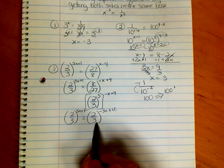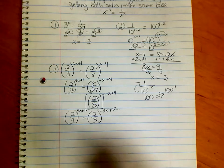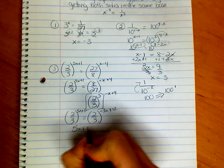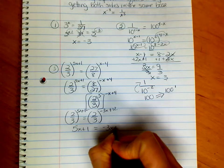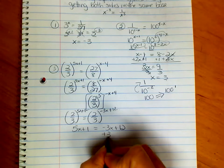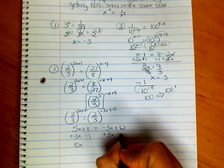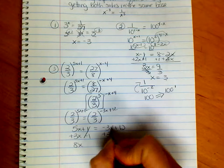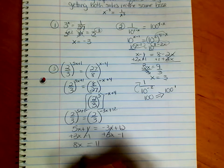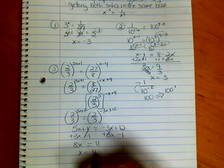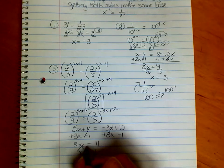So bases are the same. I can now set exponents equal to each other. So 5x plus 1 is equal to negative 3x plus 12. If I add 3x to both sides, I get 8x. If I minus 1 to both sides, I get 11. And x equals 11 over 8 when I divide both sides by 8.